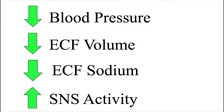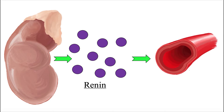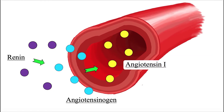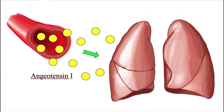The renin-angiotensin-aldosterone system is activated in response to a decrease in blood pressure, extracellular fluid volume, or extracellular fluid sodium concentration. It can also be activated by an increase in sympathetic nervous system activity. When activated, the kidneys release the enzyme renin, which enters the bloodstream and converts the inactive plasma protein angiotensinogen — produced by the liver — into angiotensin-1.